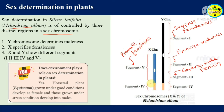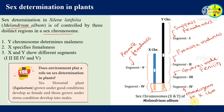Segment 4 is homologous to the X chromosome — meaning segment 4 and the X chromosome are the same.